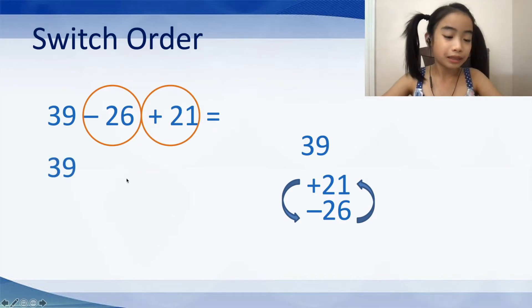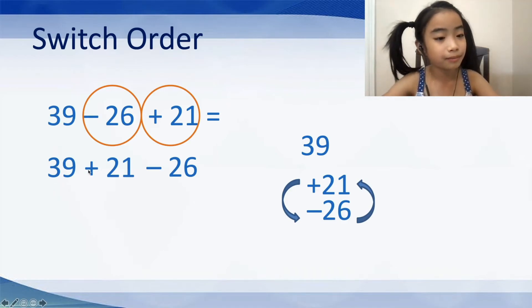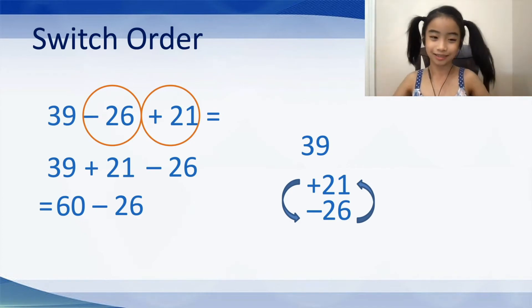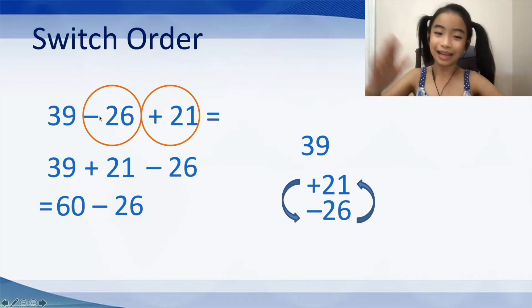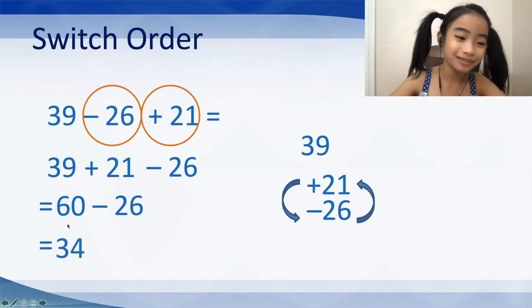So, now, we have 39 plus 21 minus 26. So, it's much easier because 39 plus 21 equals 60 minus 26. Well, that's easy. If you can't do it, well, I encourage you to pause this video and think about the answer. Okay, so, now, I deserve a drum roll. The answer is 34.